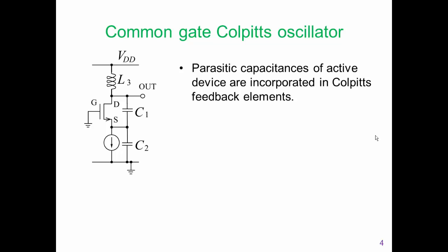One of the attributes of this circuit is that the parasitic capacitances of the active device are incorporated into the Colpitts feedback elements. So the drain-source capacitance and any capacitance associated with the source are incorporated in C1 and C2. We like that because it means the parasitic elements of the transistor are not going to resonate separately from the Colpitts feedback network. The common gate Colpitts configuration naturally incorporates the parasitic elements into the Colpitts feedback system.